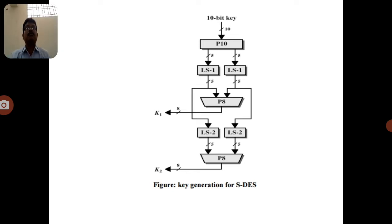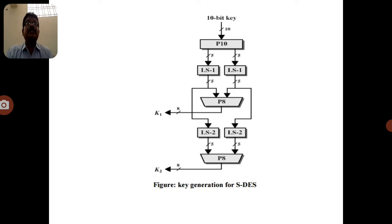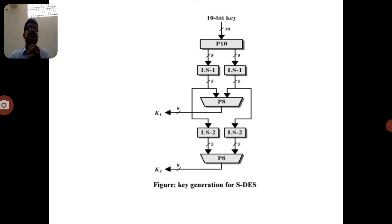Coming to the modern techniques, these are techniques applicable to encrypt binary data. The binary data starts with a minimum of 8 bits, then 16-bit, 32-bit, 64-bit, and so on. So the minimum block of data considered is 8 bits.